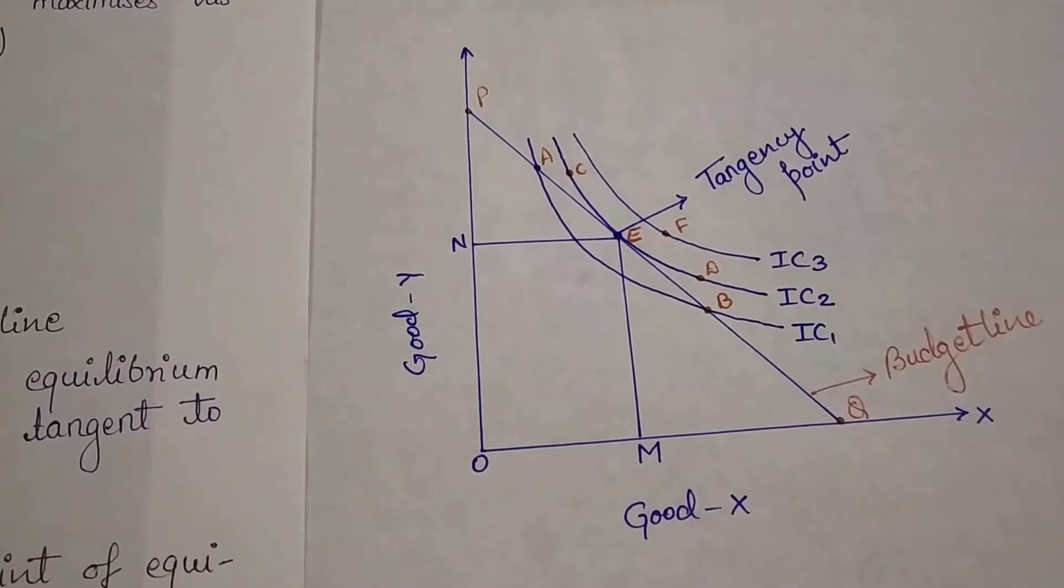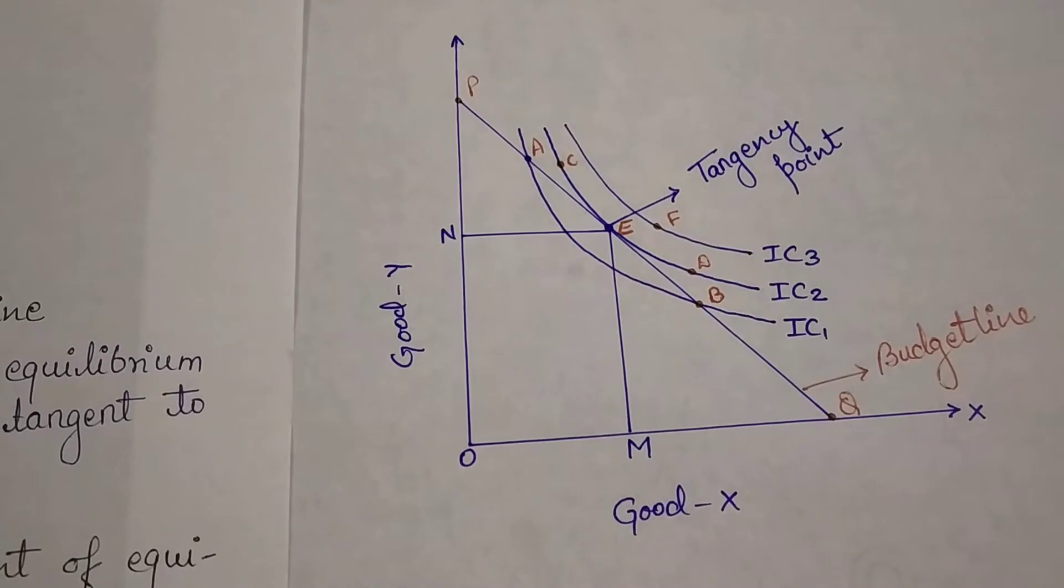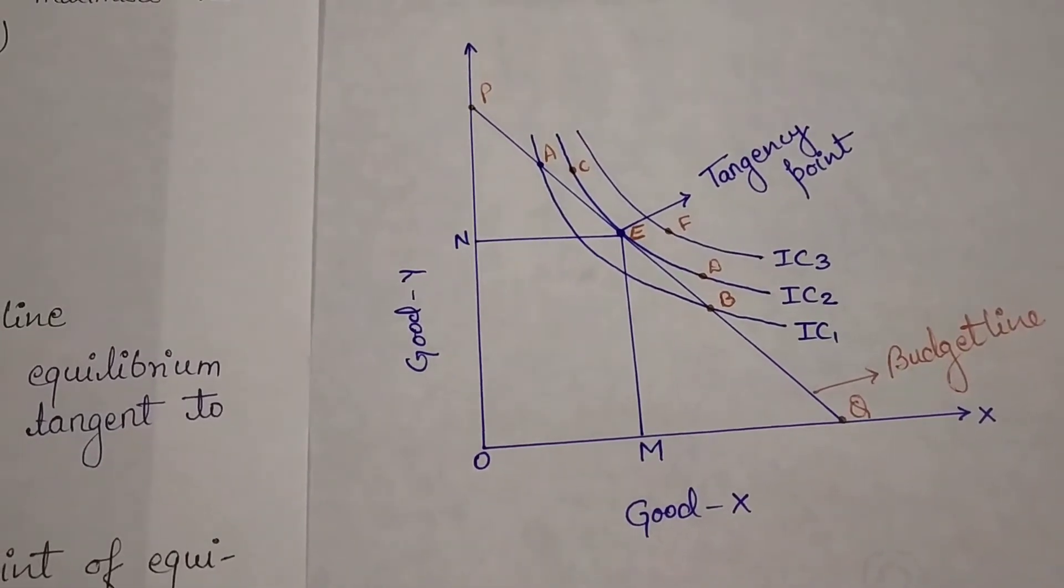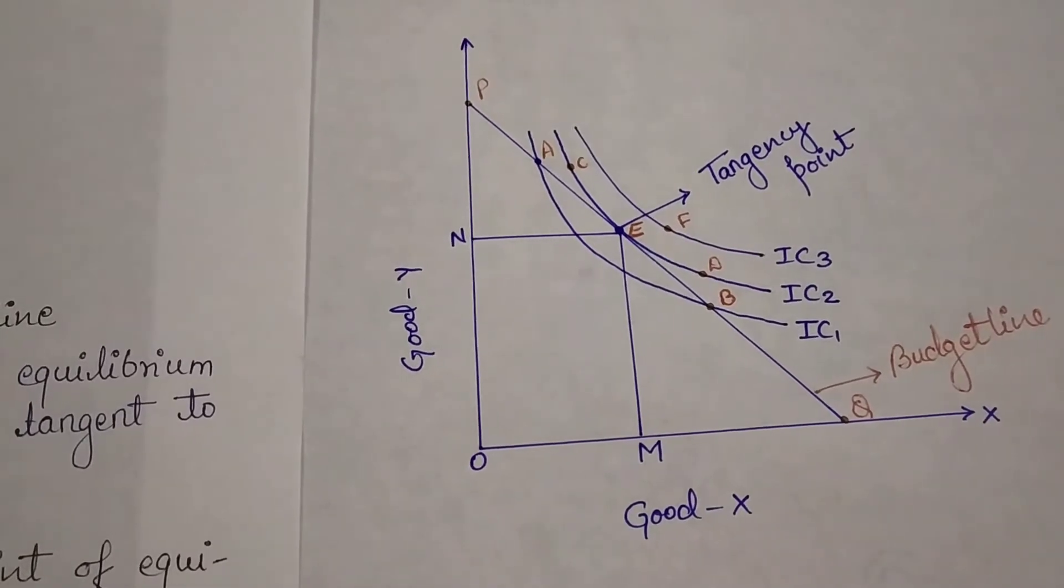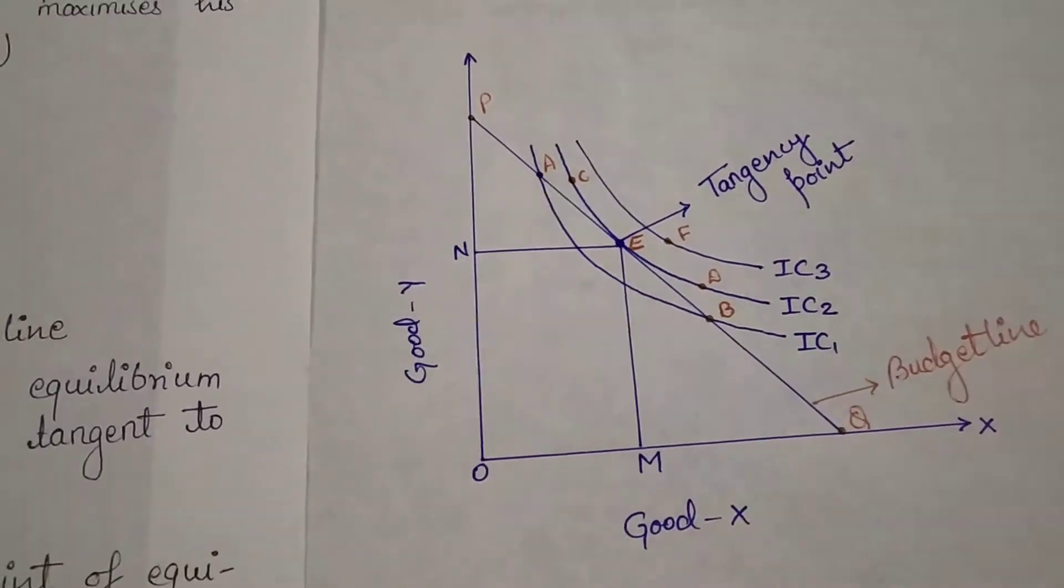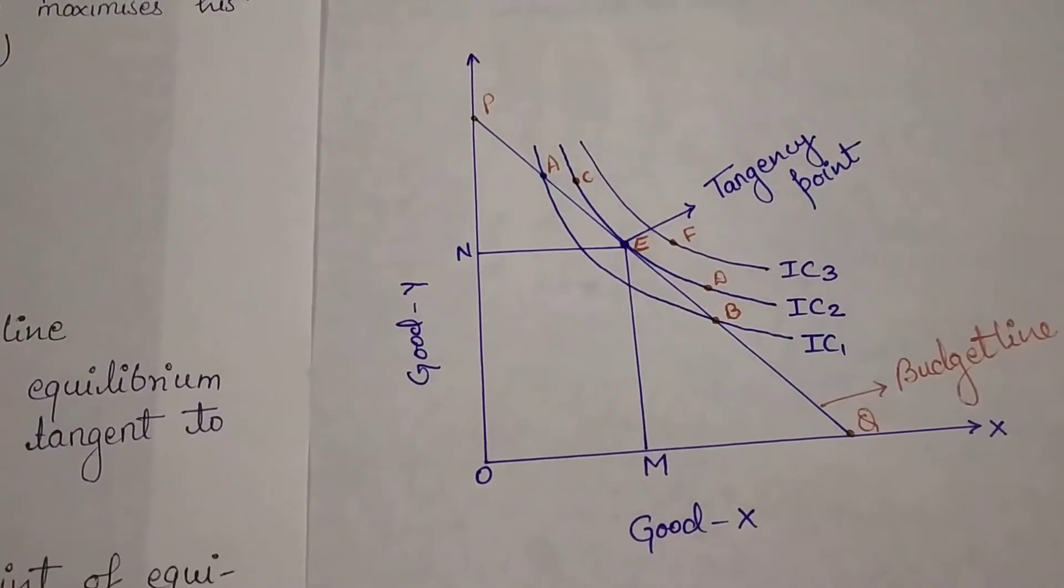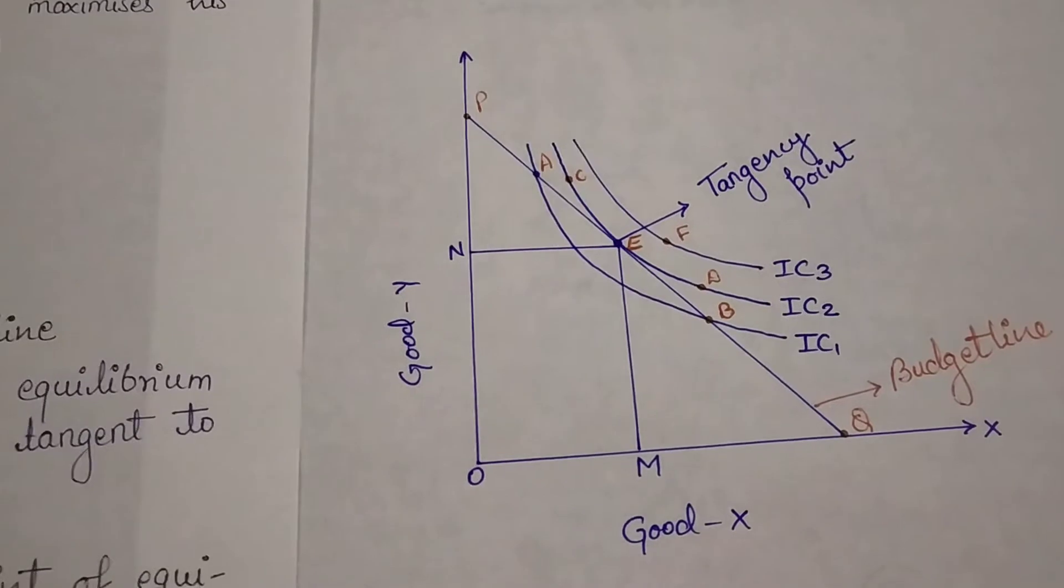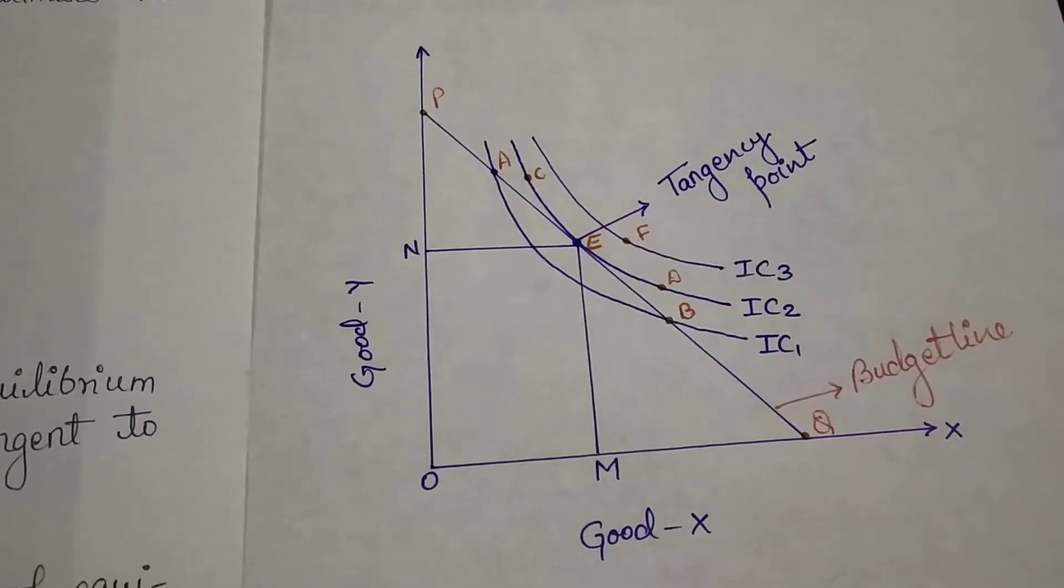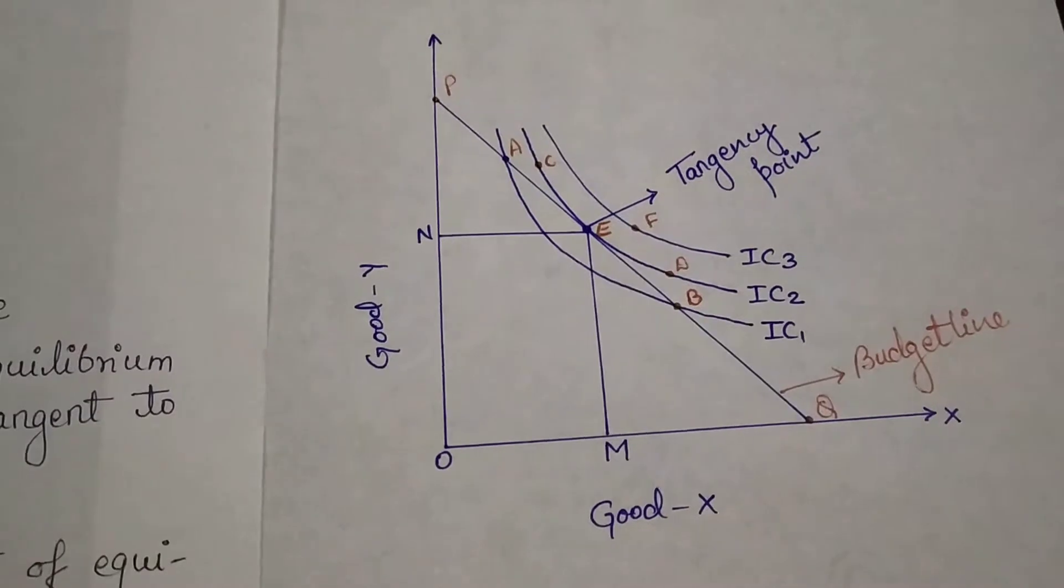But if we will talk about IC3, as I have said, IC represents higher level of satisfaction when we move higher. But if we will talk about IC3, our budget will increase, which is beyond the price line.